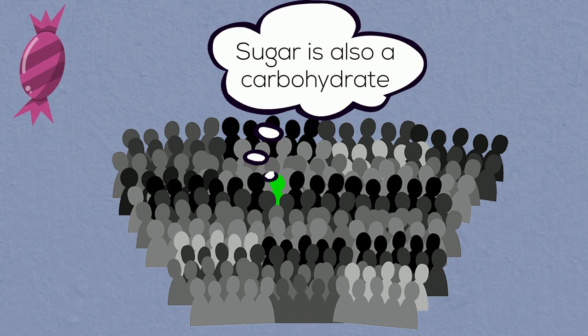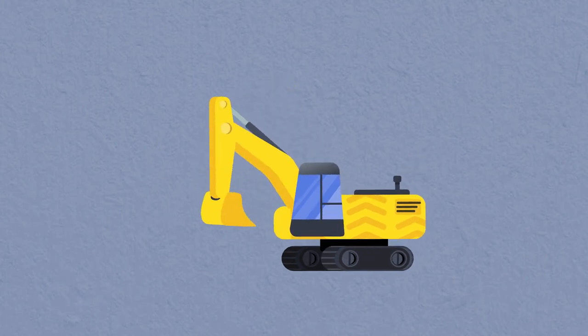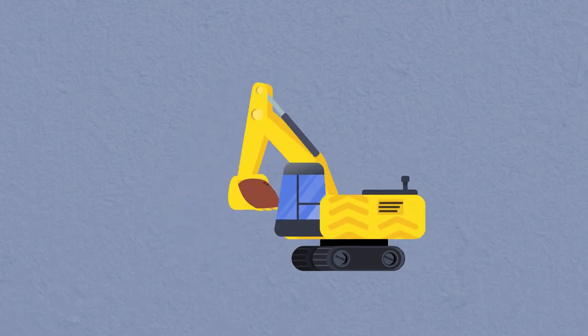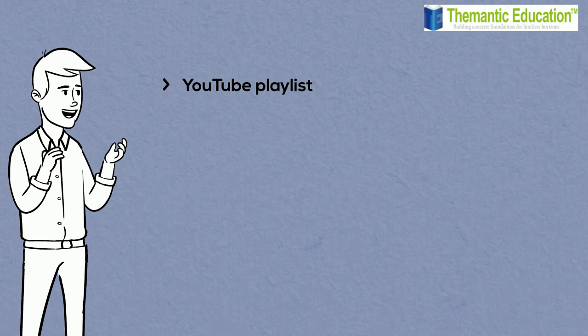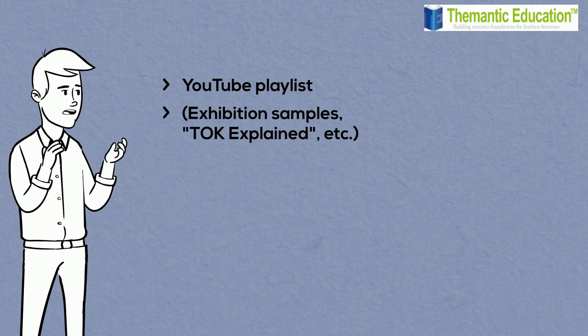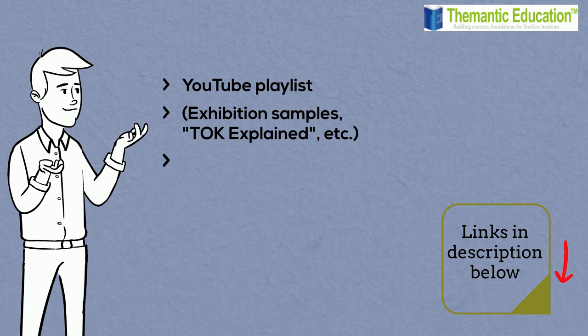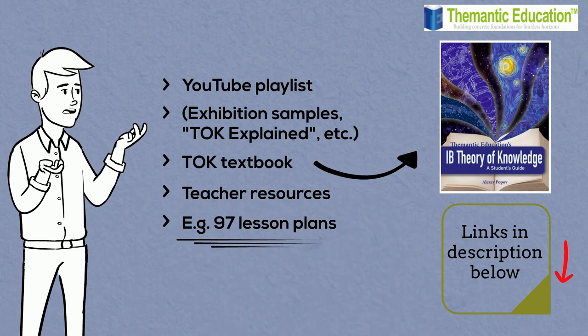In summary, don't limit yourself to the ideas and examples that other students are likely to use. Dig deeper, interrogate the prescribed essay title by asking yourself additional questions. If you haven't seen our other videos, make sure to check our full YouTube playlist. Apart from this series about typical mistakes in TOK essays, we have some useful stuff on the TOK exhibition, an explanation of key TOK concepts, and other things. And obviously check out our TOK textbook and teacher resources such as the 97 Fully Developed Lesson Plans. All links are in the description below the video. See you next time!